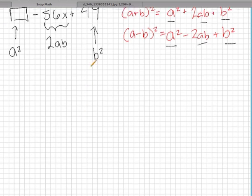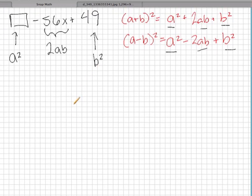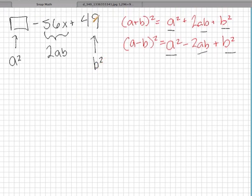It looks like we can figure out what b is right away. If b squared is 49, then b must equal 7, because 7 squared is 49.